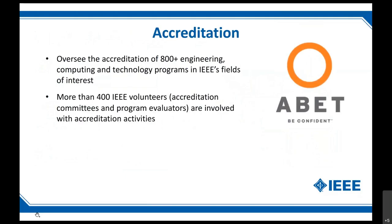EA — Educational Activities — coordinates IEEE's contribution to ABET, the Accreditation Board for Engineering and Technology, which is mainly in the U.S. but now has global reach. IEEE is a member society; there are about 50 member societies in ABET and IEEE has the most programs of any society. We oversee the accreditation of more than 800 programs in IEEE's fields of interest, with more than 400 IEEE volunteers — program evaluators, accreditation committees, and so forth — involved in the accreditation process.